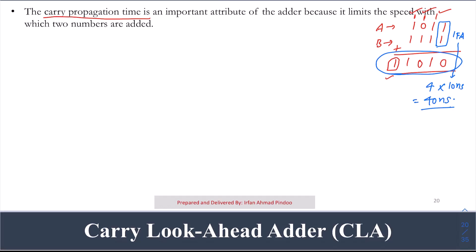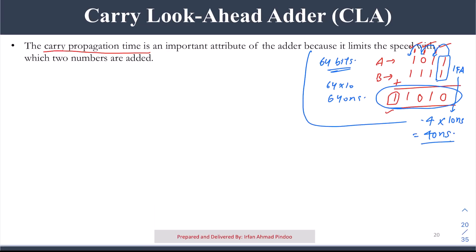This delay is only for four bits. If we are talking about 64 bits, the problem becomes very serious because we have to ripple the carry from the first stage onwards, and in the worst case that becomes 64 times 10, which is 640 nanoseconds.